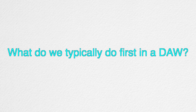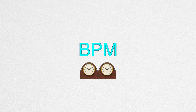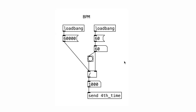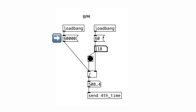What do we typically do first when we work on music in a DAW? We usually set the BPM first, so we'll do the same here. This is what the patcher for BPM looks like. We can set the BPM using this number object right here. We're dividing the beat by 60,000 milliseconds, which is one minute, and we get ourselves the length of each quarter note.